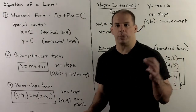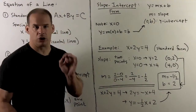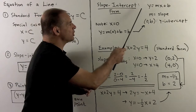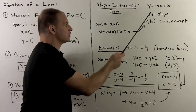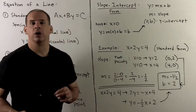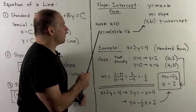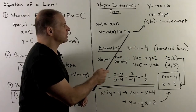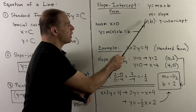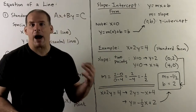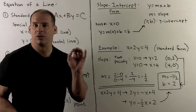For slope-intercept form, the key ingredients are the slope and the y-intercept. The equation takes the form y equals mx plus b, where m is the slope and (0, b) is the y-intercept. If I put 0 into this equation, I get y equals 0 plus b equals b, which means the point (0, b) is on our line. Because x equals 0, this is on the y-axis — it's the only point where our graph cuts the y-axis.